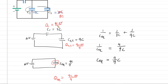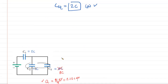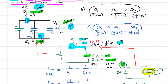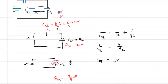We can already answer part of the question: the charge on capacitor 1 is now 9C·delta V/4, which equals 2.25C·delta V. The original charge on Q1 was 2C·delta V. Since 2.25 is greater than 2, we conclude that Q1 will increase.